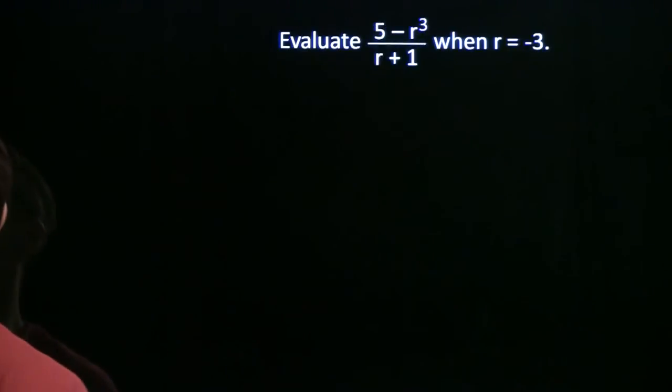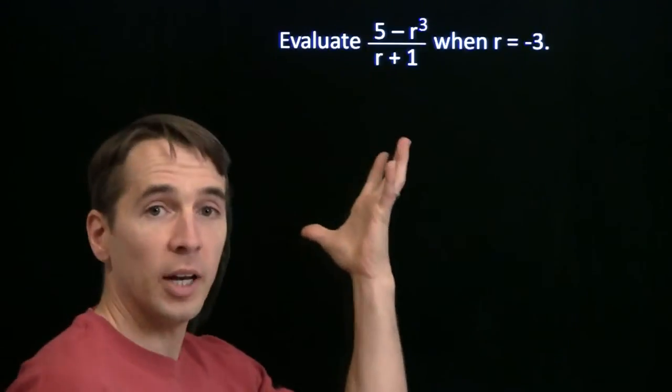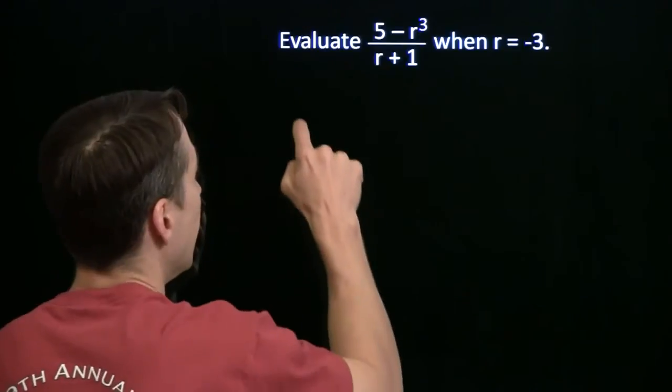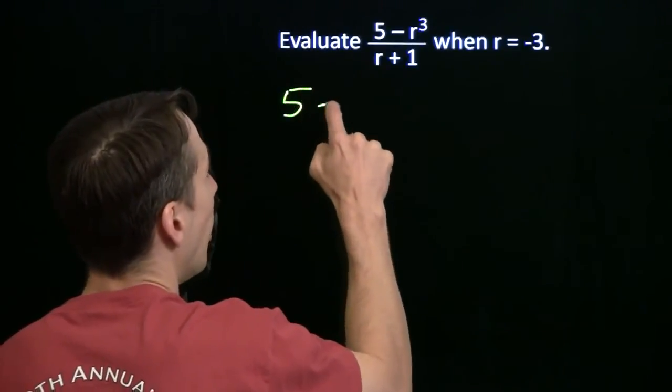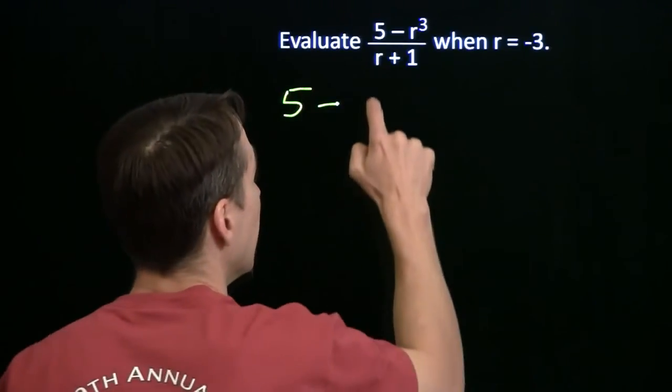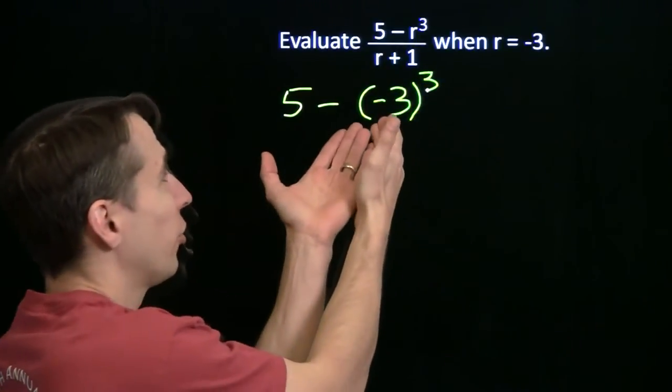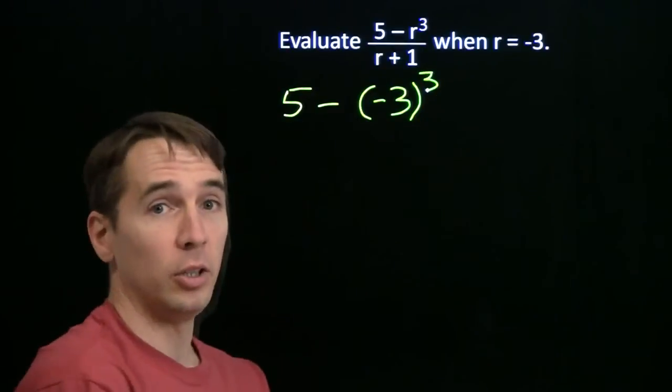Let's try a slightly more complicated one. Now we've got a fraction. Once again, r is negative 3, and I'm going to put it in here. And again, I'm going to remember my minus 3. Very important to remember that, because then I realize it's the negative 3 that's being cubed. It's not just the 3 that's being cubed, it's the whole negative 3 that's being cubed.